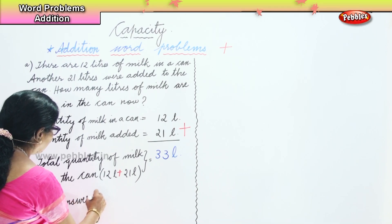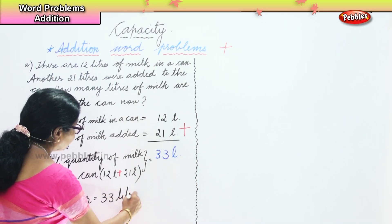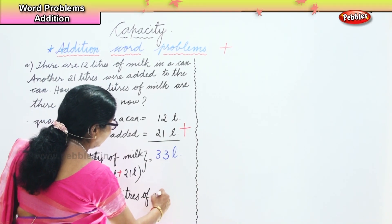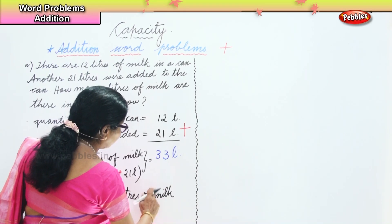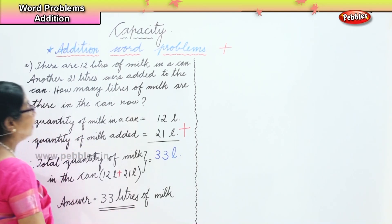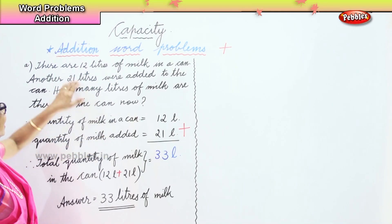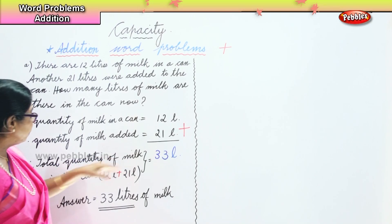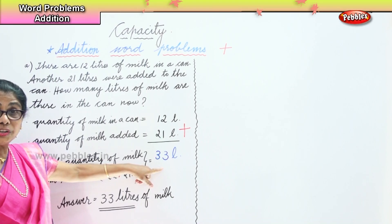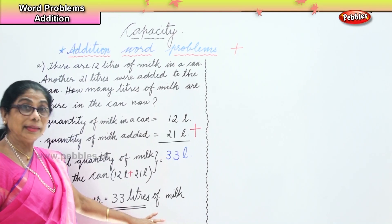The answer is 33 liters of milk. There are 33 liters of milk in the can. So to summarize: quantity of milk in a can — 12 liters; quantity of milk added — 21 liters; total quantity of milk in the can: 12 liters plus 21 liters equals 33 liters. Our answer is 33 liters of milk in the can now.